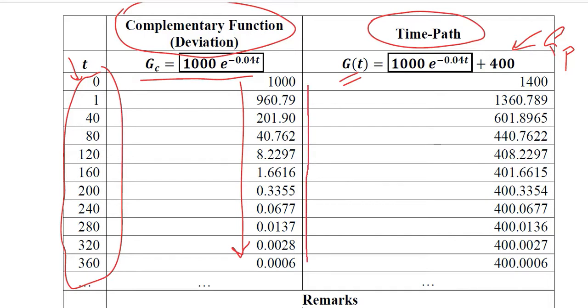We start from 1000 and we reach nearly equal to 0. Consequently, the time path also declines substantially, from 1400 to 400.